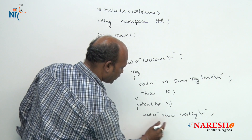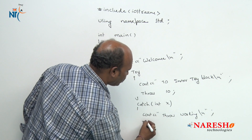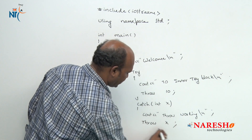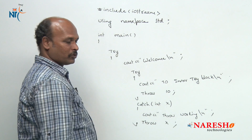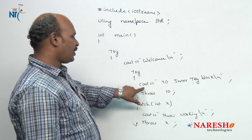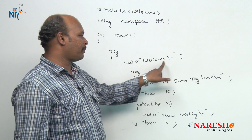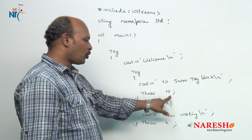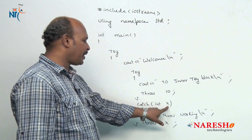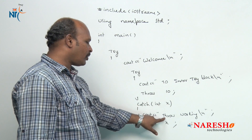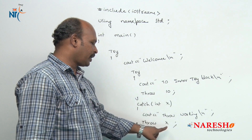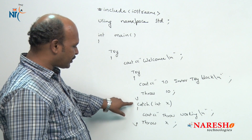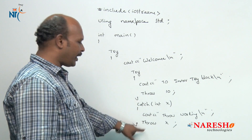Now I am going to do like this: throw x. What happened here — first 'welcome' is printed, then 'to inner try block' is printed, throw 10 is executed, the 10 is received by x, then it prints 'throw working', and later throw x means this catch block is throwing another value.